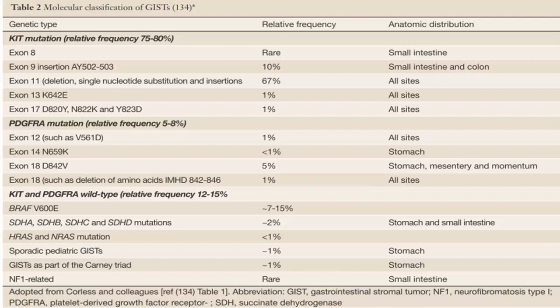Coming to genetics, the molecular classification is one of the most important classifications of GIST. There are two key mutations to remember: the KIT mutation and the PDGFRA mutation. When both are absent, it is classified as KIT and PDGFRA wild type, where mutations in SDH-B, SDH-A, SDH-C, SDH-D, BRAF, HRAS, NRAS, neurofibromatosis-1-related genes, and FGFR fusions may be detected.